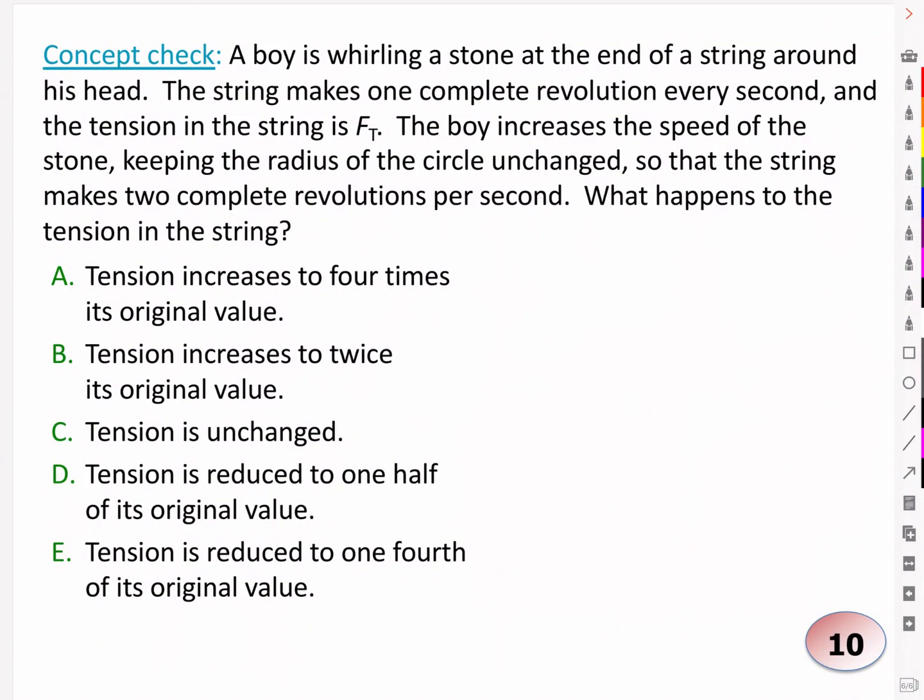So let's take a moment to do a little concept check to check your understanding. A boy is whirling a stone at the end of a string around his head, and the string makes one complete revolution every second. And the tension in the string here is Ft that is keeping that object moving in a circle. The boy increases the speed of the stone by keeping the radius of the circle unchanged, so that the string makes two complete revolutions per second. What happens to the tension in the string? Take 10 seconds to think this one out.